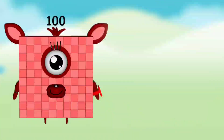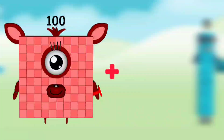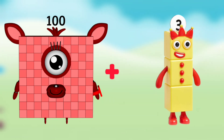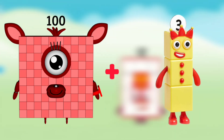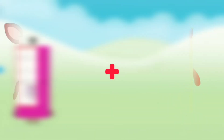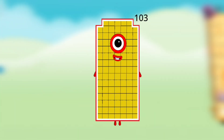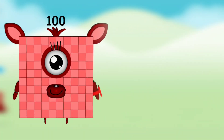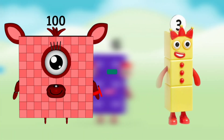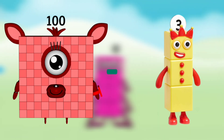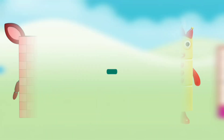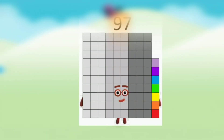Number block 100 plus Number block 3 equals to Number block 103. Number block 100 minus Number block 3 equals to Number block 97.